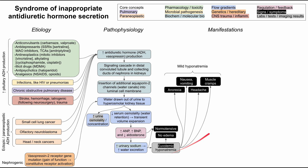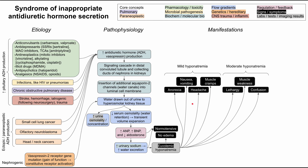A lot of the manifestations come from this euvolemic hyponatremia. When the patient has mild hyponatremia, they can have anorexia, nausea, vomiting, headaches, and muscle cramps — it's an electrolyte disturbance, so many things can stem from it. In more moderate hyponatremia, the patient can have lethargy, muscle weakness, and confusion.